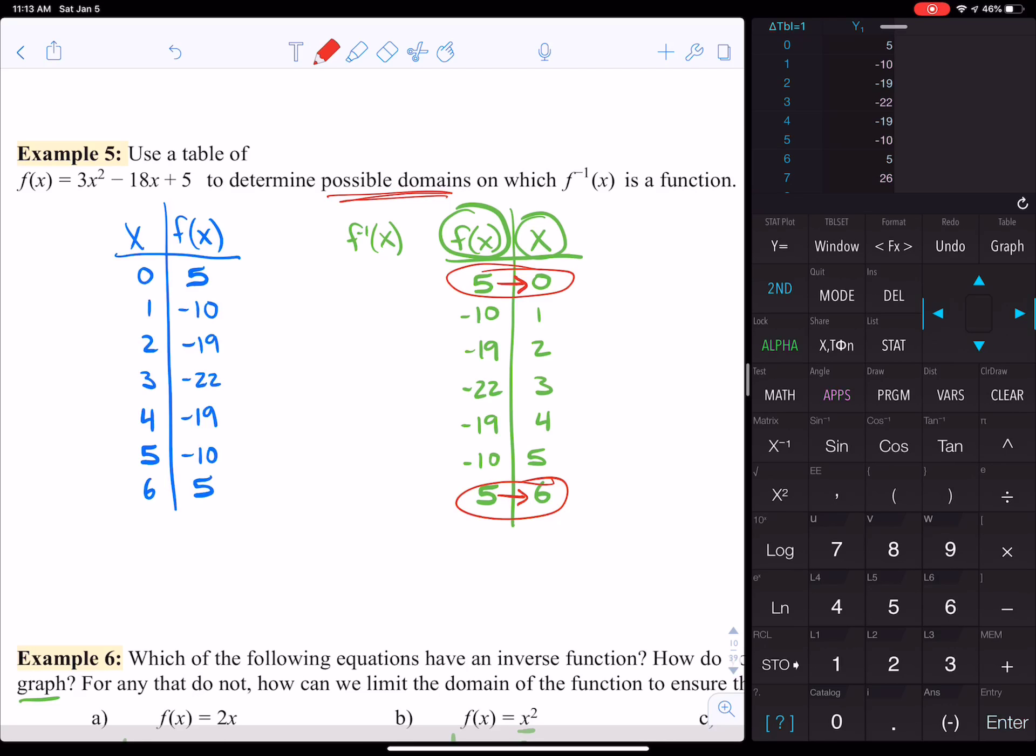So what we can tell is this continues to happen. Like negative 10 goes with 1 and also goes with 5. Negative 19 goes with 2 and also goes with 4. But right here in the middle looks like a turning point where that is one x that has a unique y.